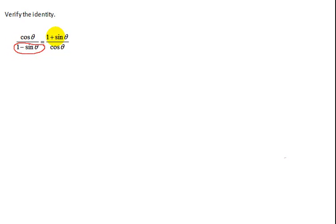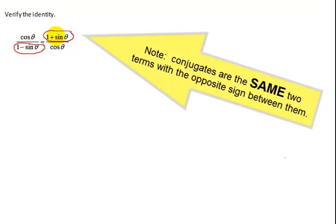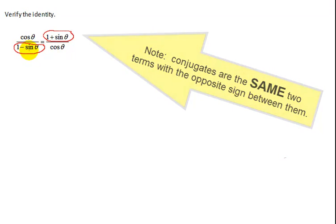If you look on the left hand side, the denominator is 1 minus sine theta. On the right hand side, the numerator is 1 plus sine theta. If you ever get a situation like this where you get conjugates—remember, conjugates are two terms with the opposite sign between them—you always want to multiply numerator and denominator of one side by the conjugate.